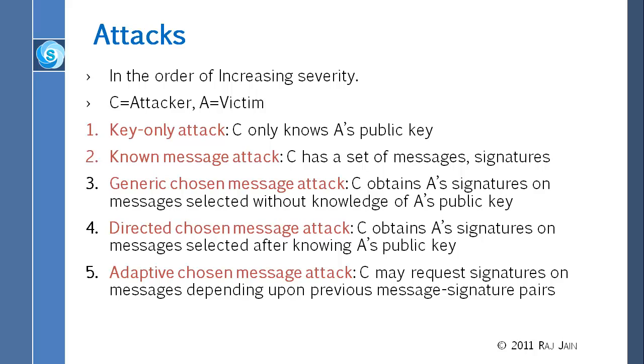Adaptive chosen message attack: C may request signatures on messages depending upon the previous message signature pairs. You give them a message and get the signature. Then you study it a little bit more. Then you say, okay, now if I get this one more, I will know more. So you send another message, which is especially formulated. And then you get two. Now you do something more. And then you get three. These are all designed based upon the previous signatures and messages, you generate new messages. So somebody actually wrote a paper in which they wrote down these are all possible attacks.